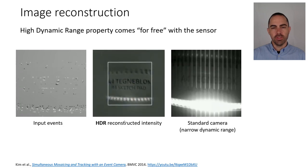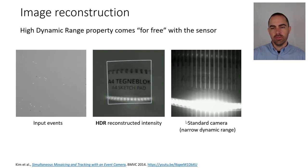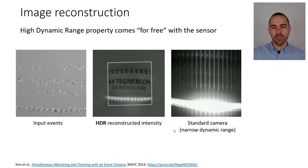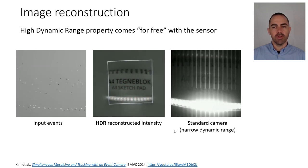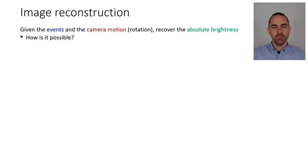It's not only that we will be able to get an image; it's also that because events are high dynamic range, the reconstructed images will also be high dynamic range — they inherit those properties. Here we see how the image is built from scratch from zero to a grayscale value, and on the right for comparison is the output of a standard camera with a lower dynamic range.